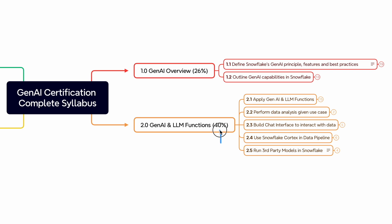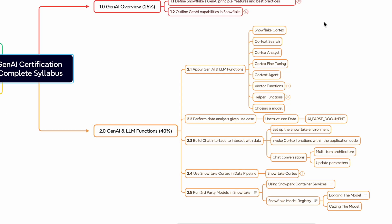Domain 2 carries the highest weight in the exam at 40%, and you can expect at least 20 to 22 questions from this domain alone. It contains 5 subsections. This is the domain where you must practice hands-on because the exam will ask SQL-based and scenario-based questions directly from the LLM functions. The exam uses subtle syntax differences, so only reading the documentation is not enough. This domain is your scoring zone.